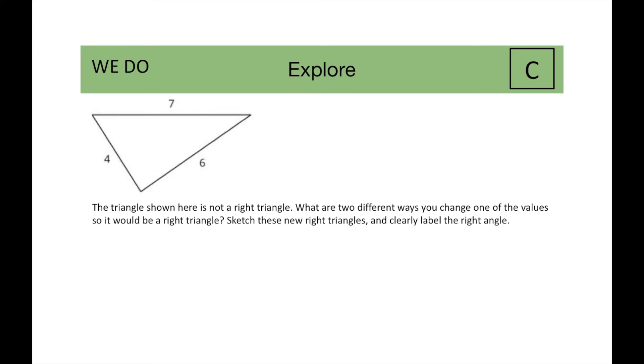A sample response from your students could be that if four and six were the legs of the right triangle, that means the hypotenuse would have to be equal to four squared plus six squared equals C squared. And when you calculate that...